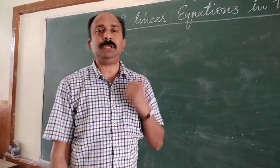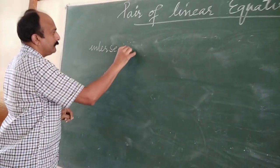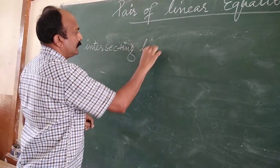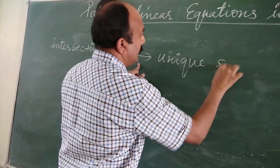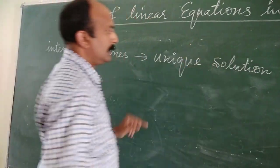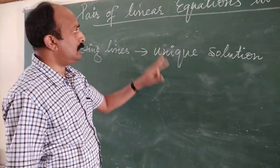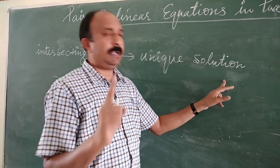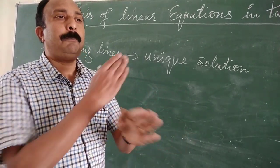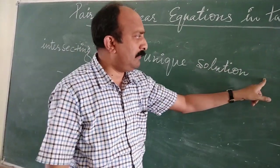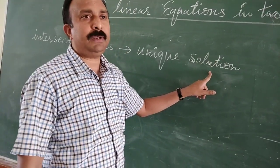The graph of a pair of linear equations can be either intersecting lines, coinciding lines, or parallel lines. Accordingly, the type of solution will change. If the graph represents intersecting lines, then that system of equations will have a unique solution — one particular value of x and one particular value of y. The unique solution will be the point of intersection of both graphs.